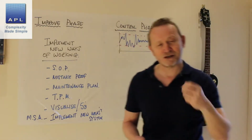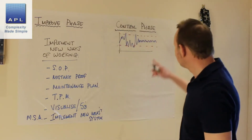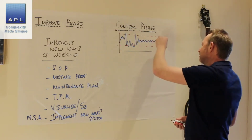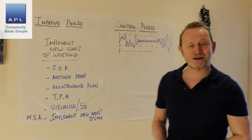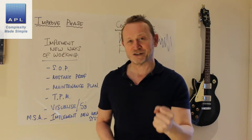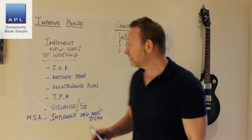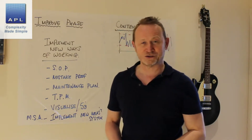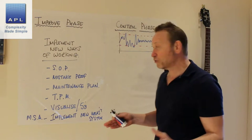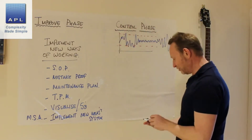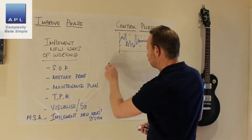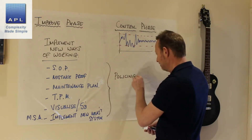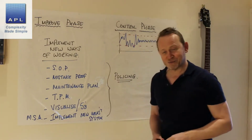We've got the process now behaving as we would want it to. The key point about the control phase is that we keep it there — what we don't allow to happen is for the process to go back to where it came from. That's what the control phase is about: maintaining the gain. This can only really be seen over a longer period. Control is the most difficult thing to achieve, and the best companies in the world are brilliant at it. Essentially, it is a policing process.